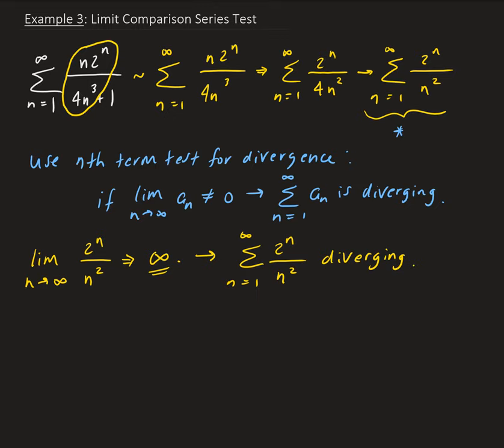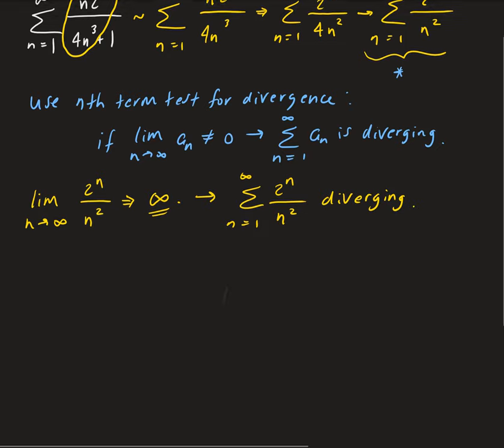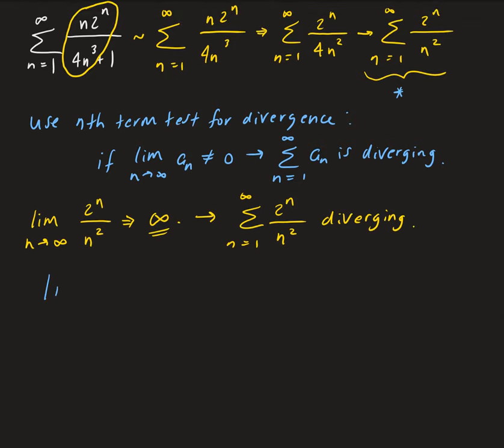So now we can proceed on, we can go ahead and use the limit comparison series test now. So we're going to take the limit as n goes to infinity of n times 2 to the n all over 4n cubed plus 1 divided by